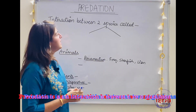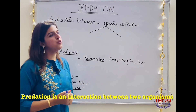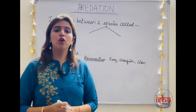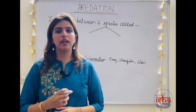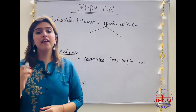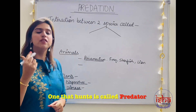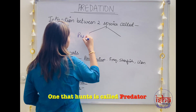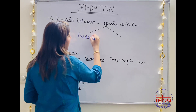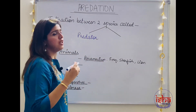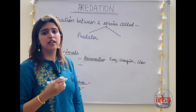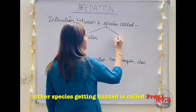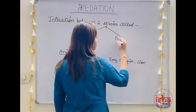Predation is an interaction between two organisms — one that hunts, and one whose hunt is taking place. The one that hunts is called the predator, and the poor one that is getting harmed and hunted is called the prey. So: prey and predator.